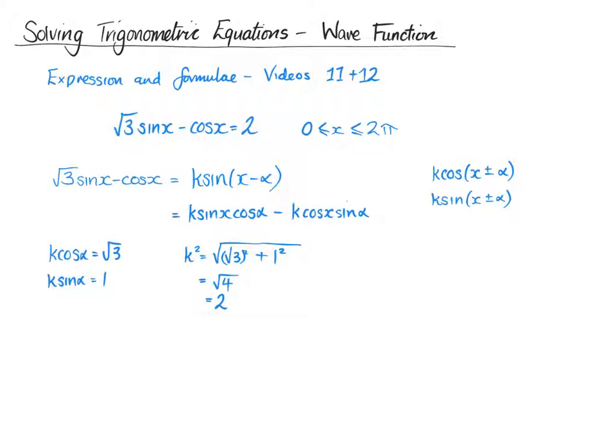Again, if you're stuck with these, go back, look at the videos for the wave function. And then we have tan alpha equals k sin alpha over k cos alpha, which is 1 over the square root of 3.